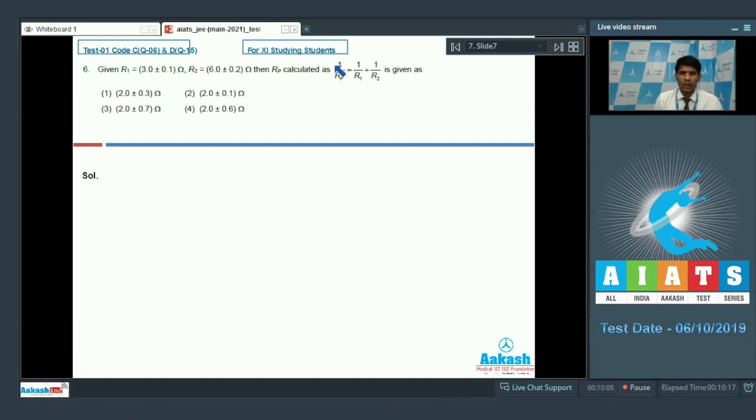Then I would say 1 by Rp would be equal to 1 by 3 plus 1 by 6, or Rp is equal to 2 ohm.